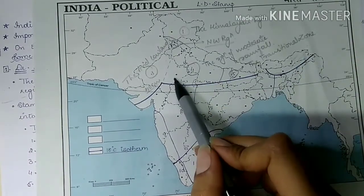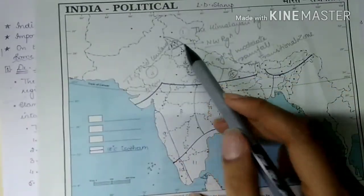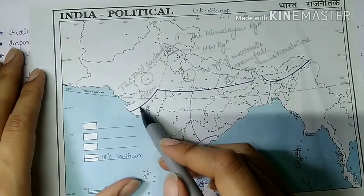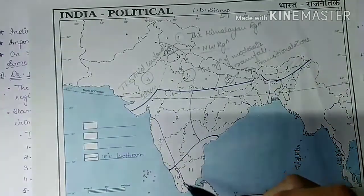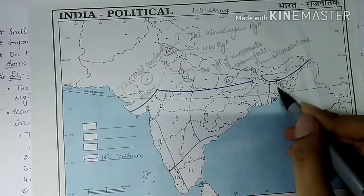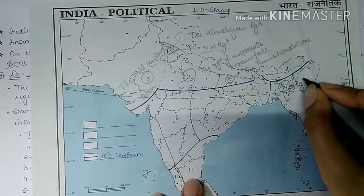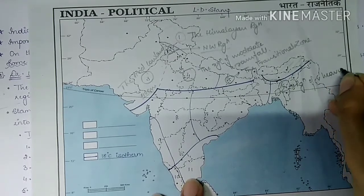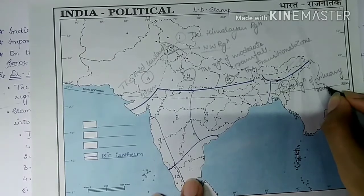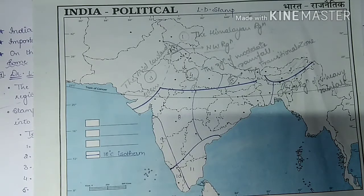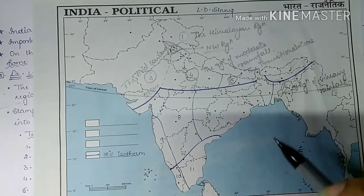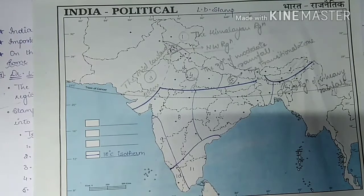These were the five regions of north India — above the 18-degree isotherm. Below it, the first region is the region of very heavy rainfall. It receives more than 200 centimeters of annual rainfall and includes Assam, Meghalaya, Tripura, Mizoram, and Nagaland.